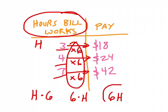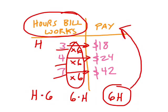To summarize, six h is a variable expression to help find Bill's pay given the number of hours he works.